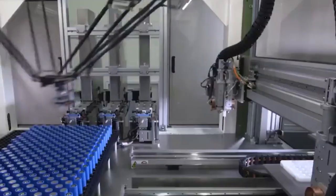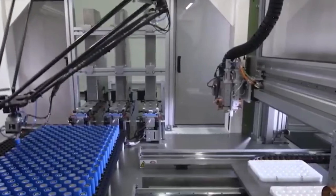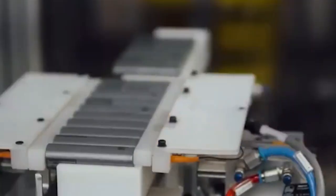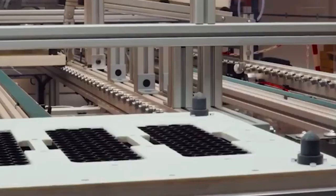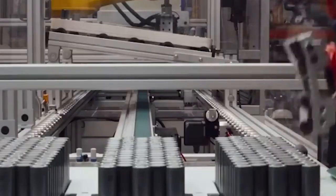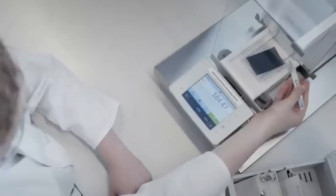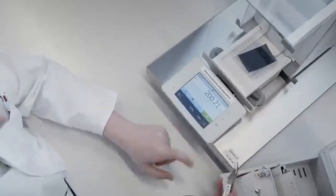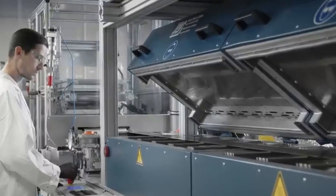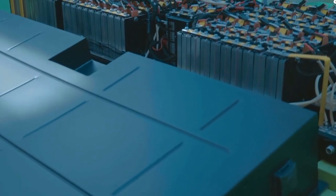In their relentless pursuit of optimal performance, the researchers have also formulated localized high-concentration electrolytes specifically designed for silicon anodes. This formulation plays a crucial role in reducing leakage current and extending the cycle life of silicon anode batteries. By fine-tuning the electrolyte composition, they have successfully mitigated potential issues and improved the overall efficiency and longevity of the batteries.